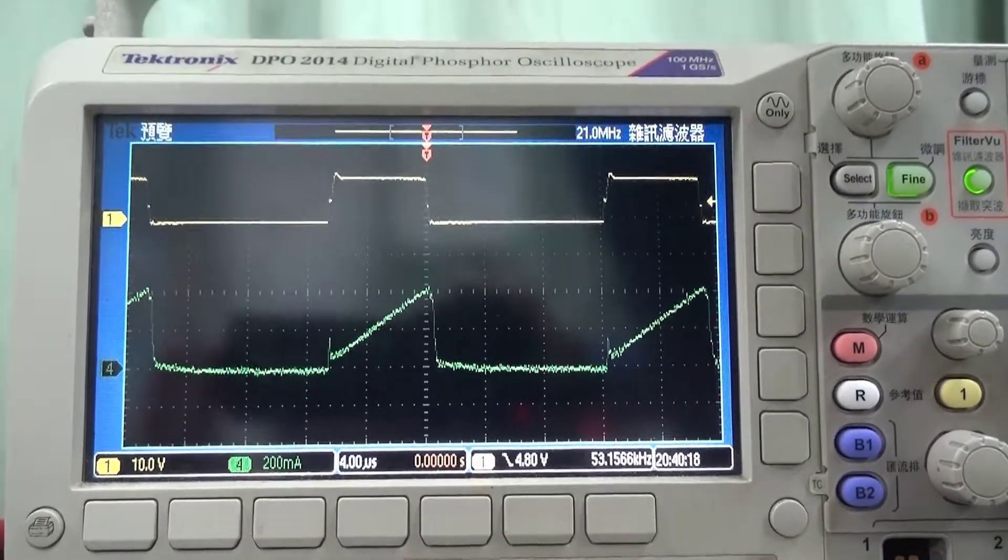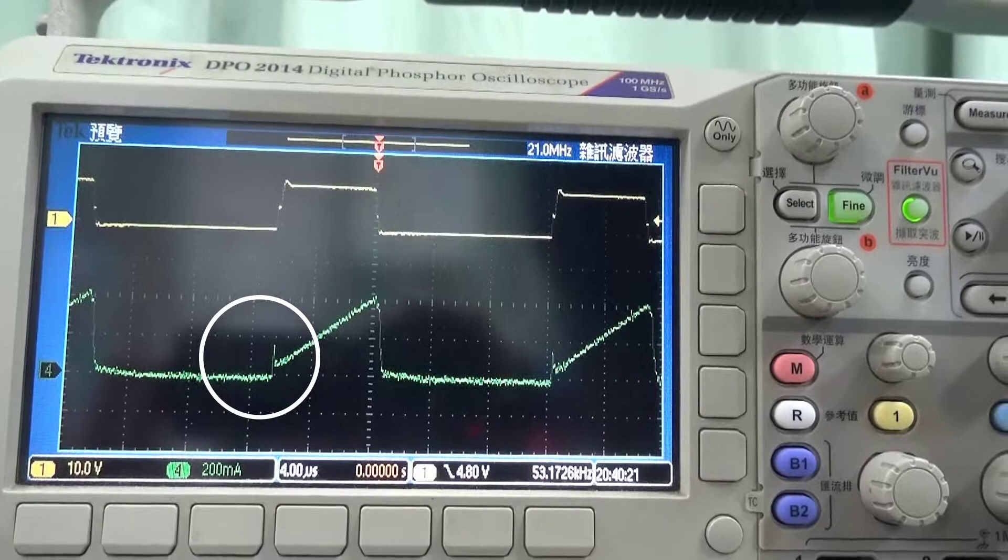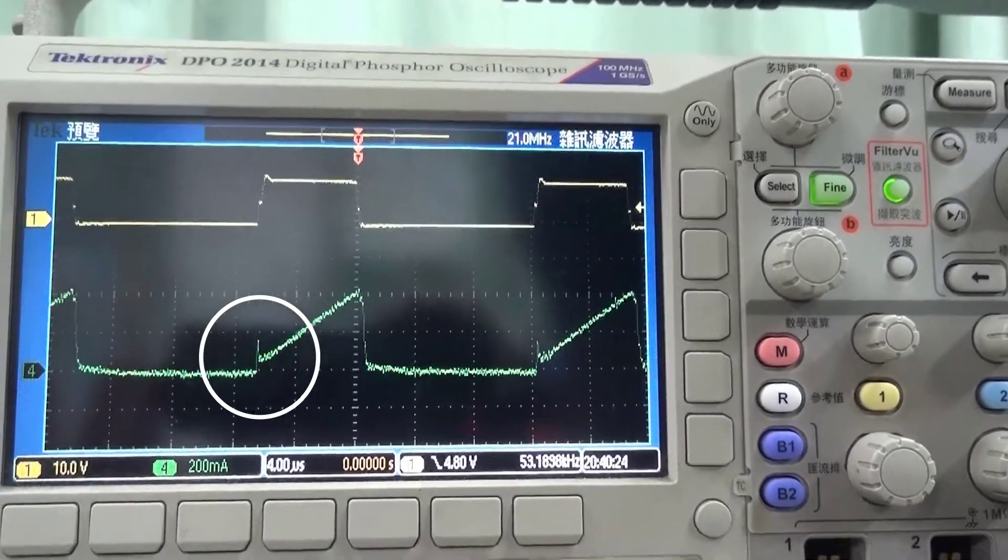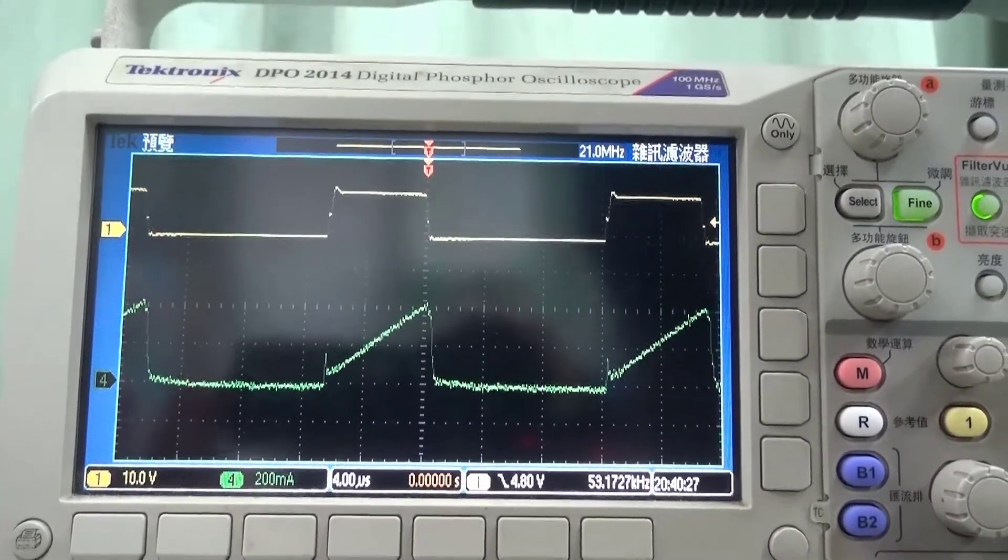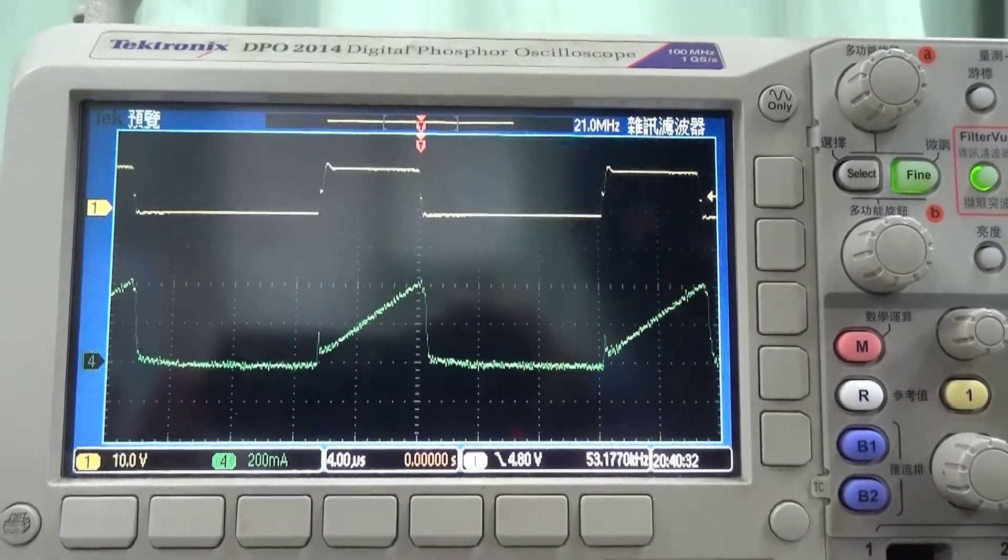We can see again that our initial value in the ON state is non-zero, meaning that again at 12W we are still in CCM.